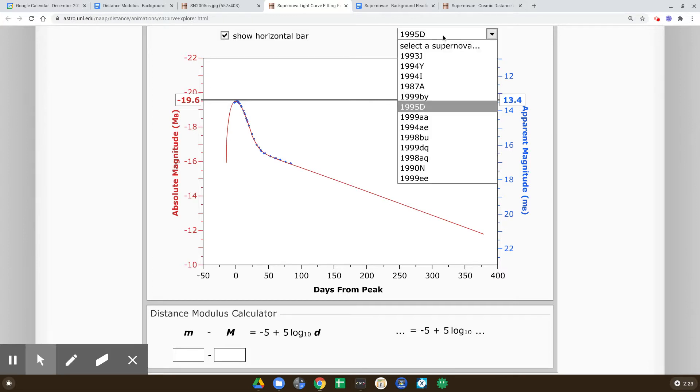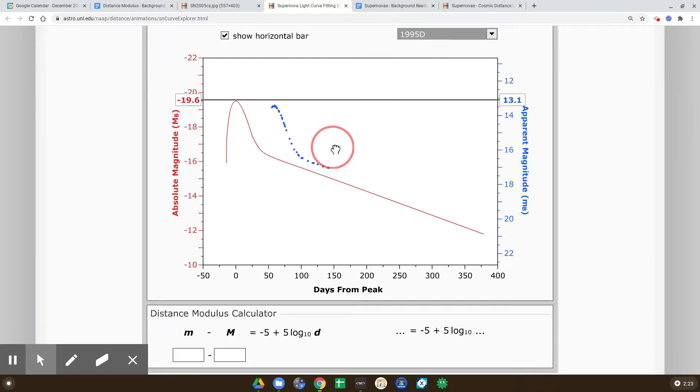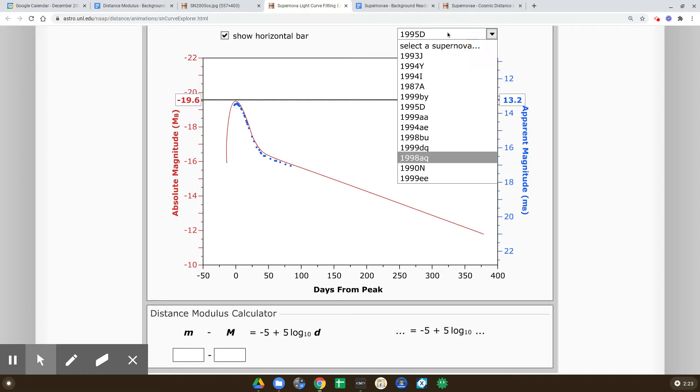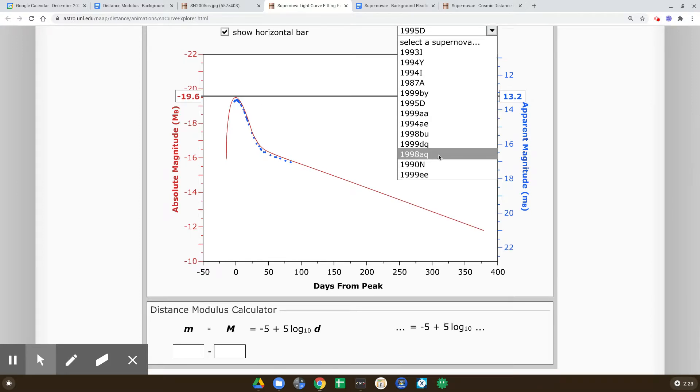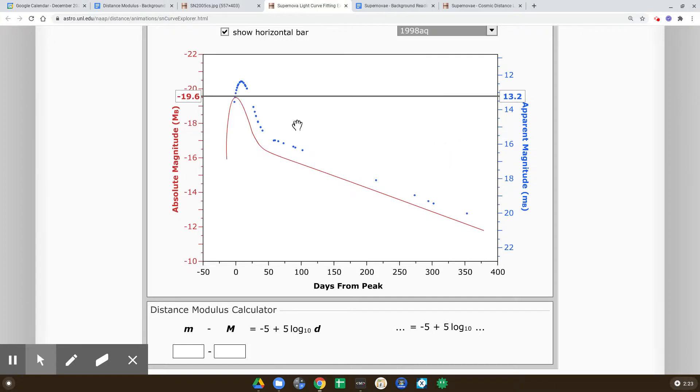But I could do this with lots of different data. And you see, it's a pretty simple thing to find that distance modulus. So I'm going to do this for another supernova. This is 1998 AQ. And I'm going to ask you about this one in the lab. So I line that up.